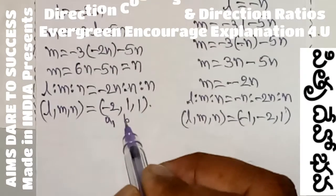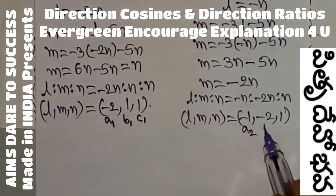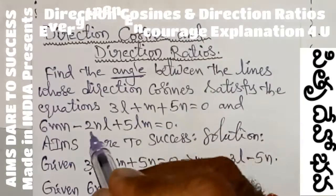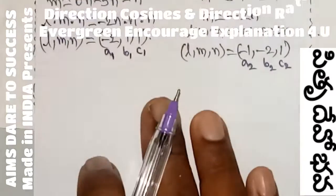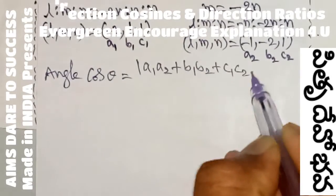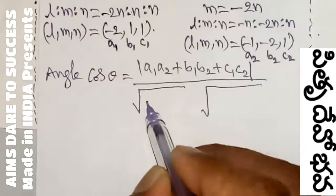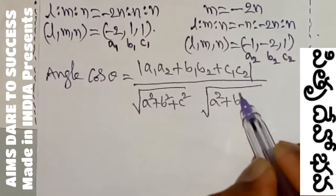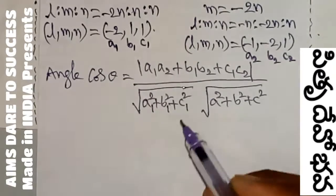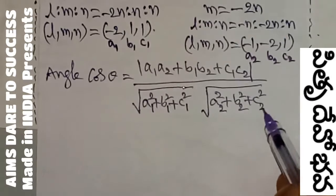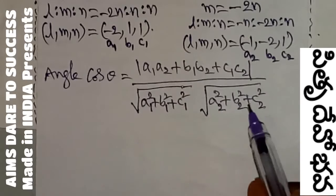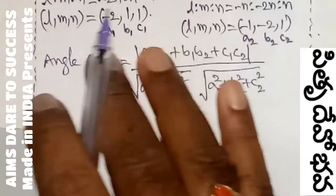So here these values you can take as A1, B1, C1 and next as A2, B2, C2. After getting these values, I am going to see the question one more time — find the angle between the lines. For angle, I want to write the formula: cos theta equals mod of A1·A2 plus B1·B2 plus C1·C2 divided by root of A1² plus B1² plus C1² into root of A2² plus B2² plus C2².